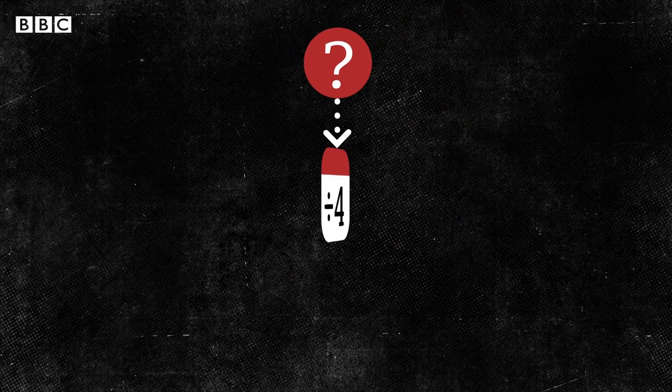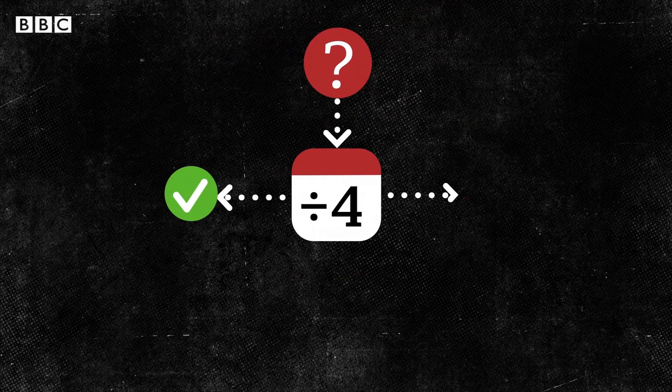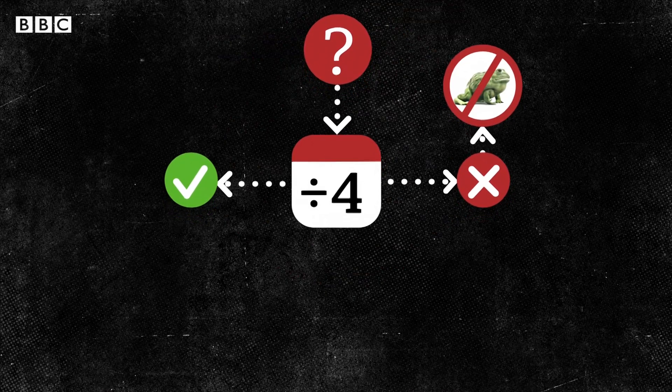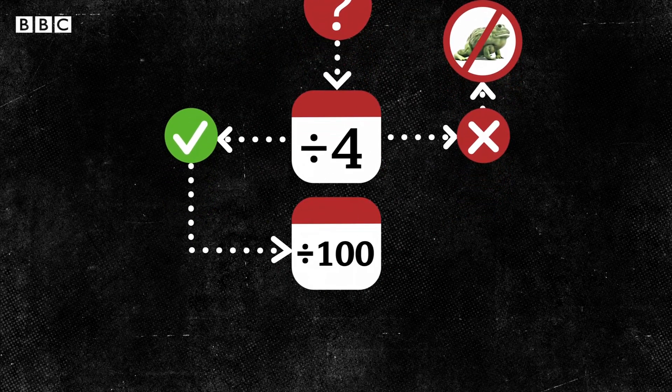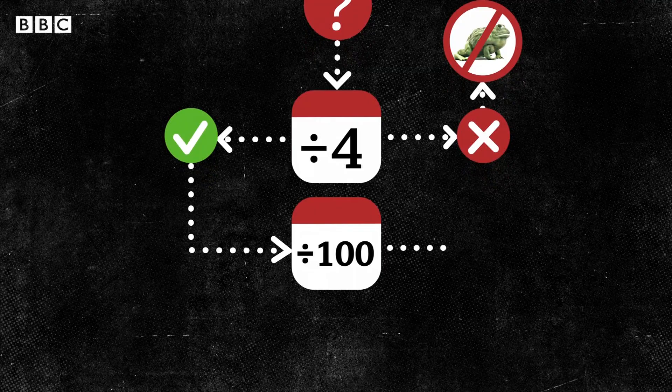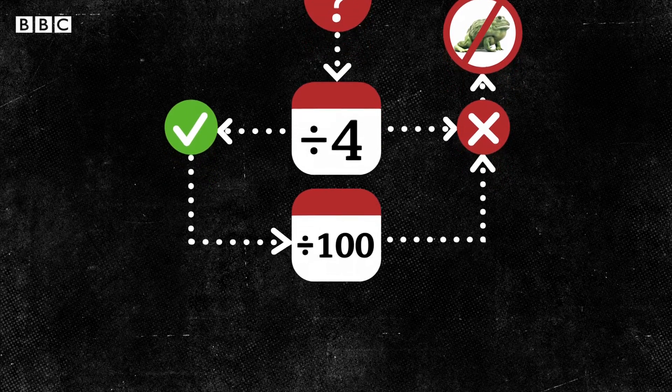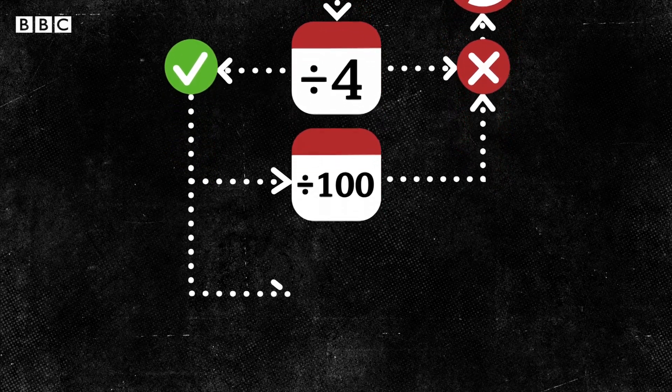The first rule is that the year to add an extra day must be divisible by four. The second rule is that a leap year cannot fall on a year that's divisible by 100. If it does, no leap day is added to that calendar year. But to make things even more complicated, there's an exception to this second rule.